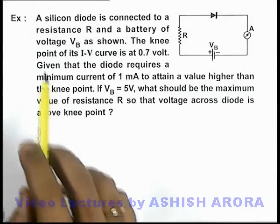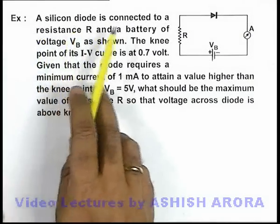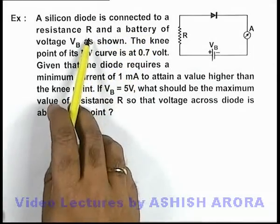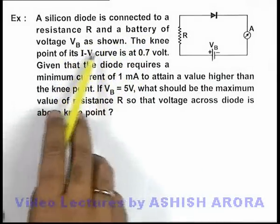Dear students, in this example we are given that a silicon diode is connected to a resistance R and a battery of voltage V_B as shown.